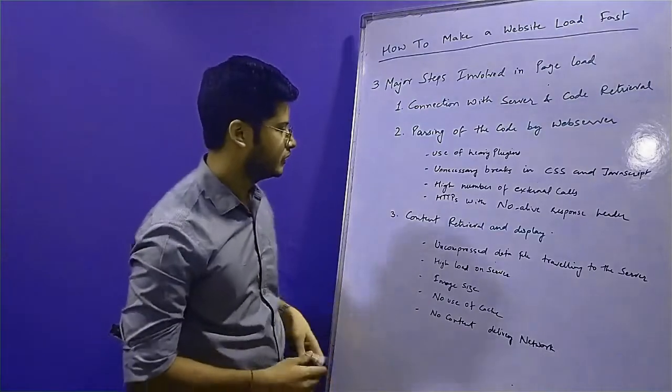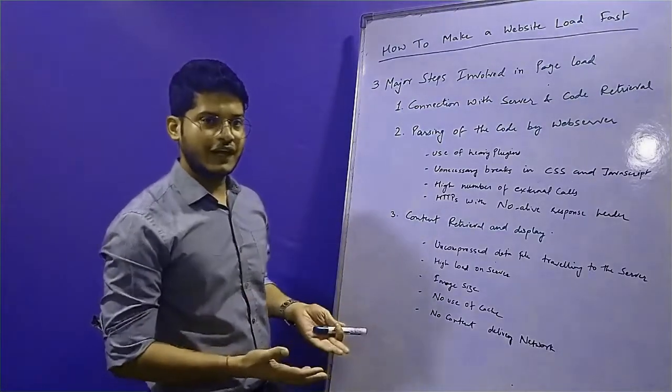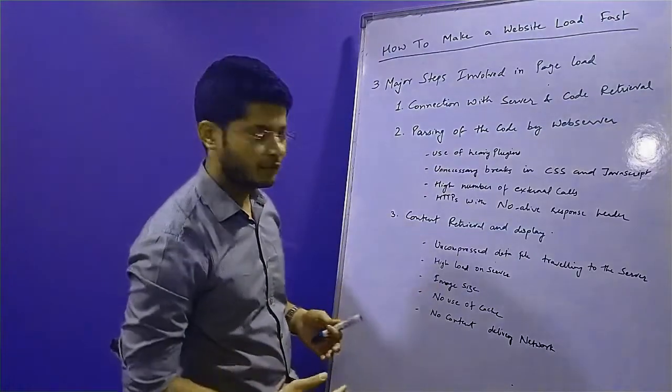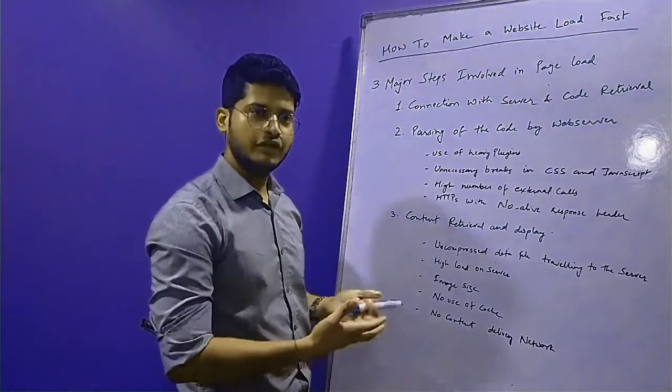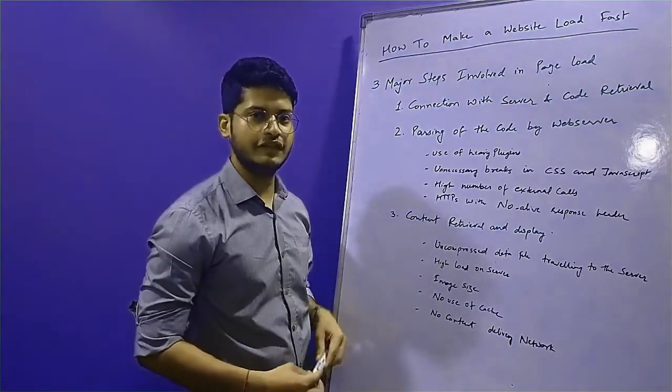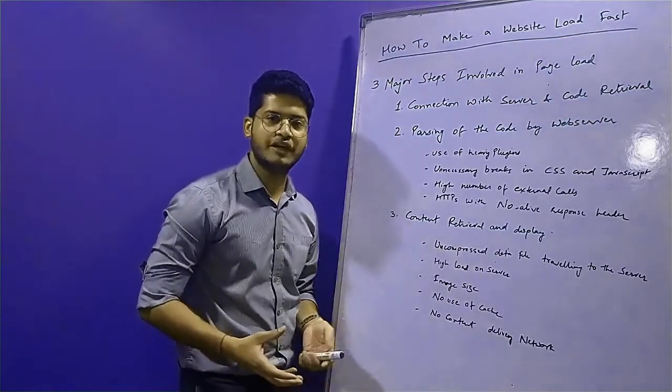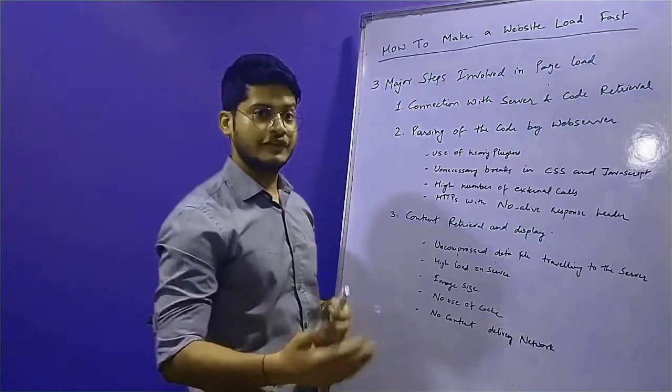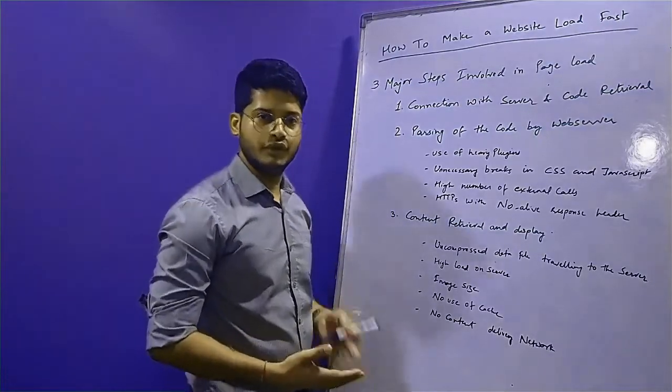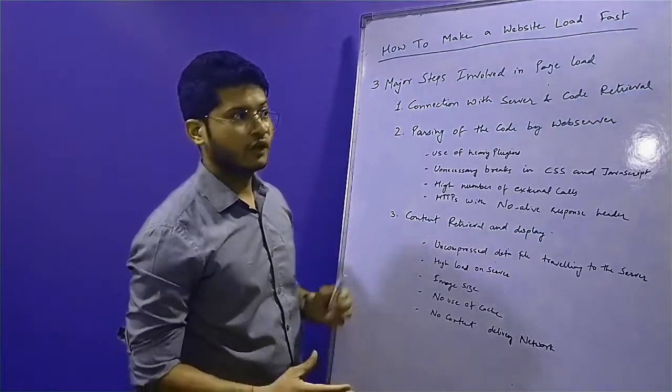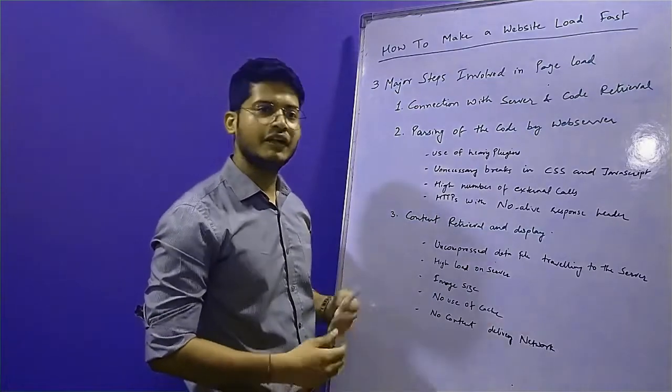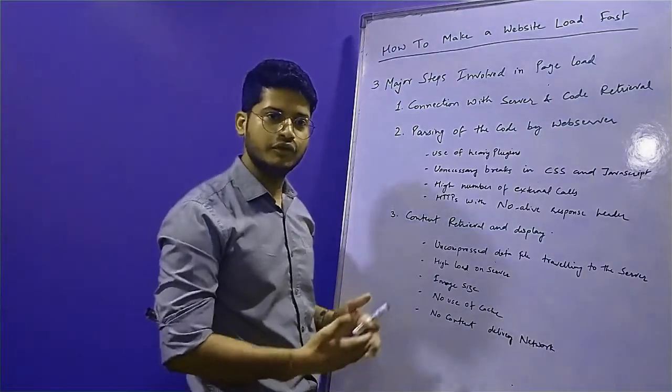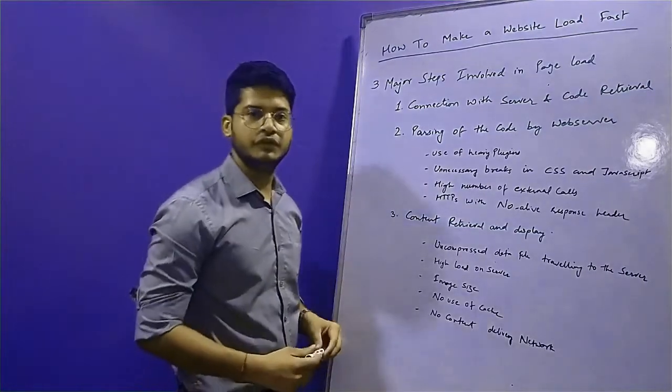The third step where you can save time is content retrieval and display. Once all these steps are done and all the links and calls have been made, the content will retrieve and be displayed to the user. If you have uncompressed data files traveling over the server, it will consume huge bandwidth and slow down the website load process. Also, if you have high load on the server and the server is not responding to the calls, again you will have poor speed. Image size also matters—a lot of times what people do is they upload their images uncompressed without reducing the size. So again, huge size means huge data coming to your browser from your server, and it will involve a huge time lag.